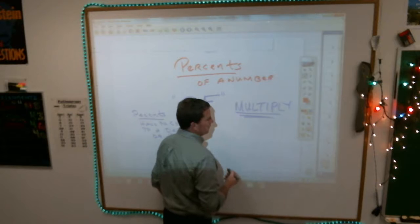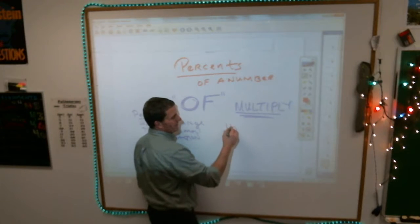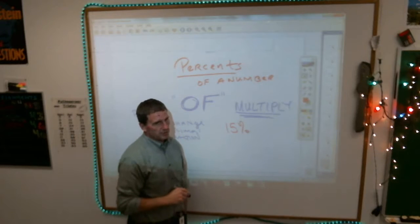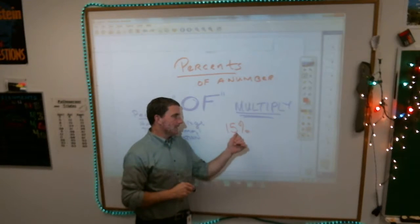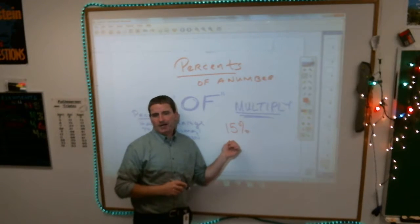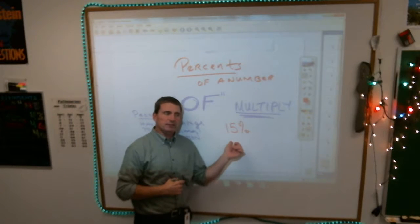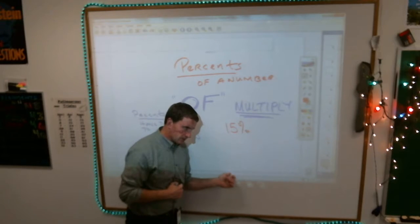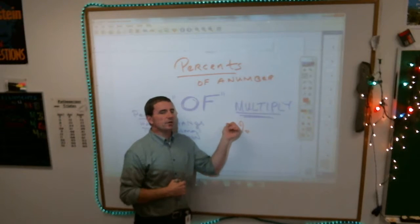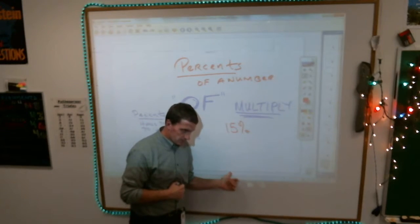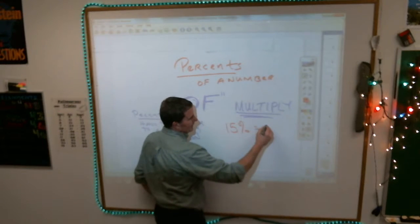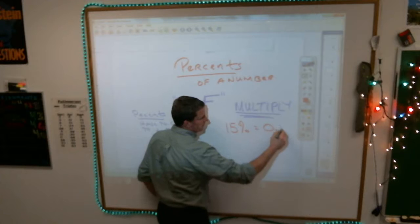Let's just make sure we know. If I have 15%, 15% as a decimal is what? Remembering that percent means out of 100, 15% means 15 out of 100, or 15 hundredths, and as a decimal you would write 15 hundredths as 0.15.